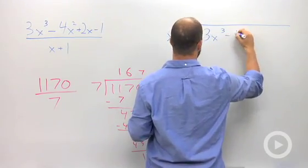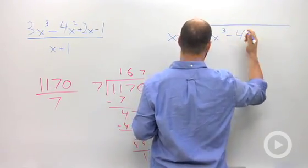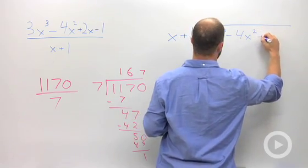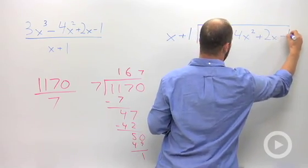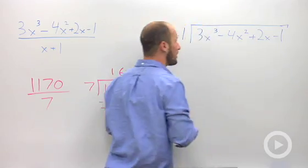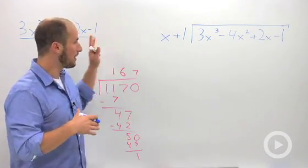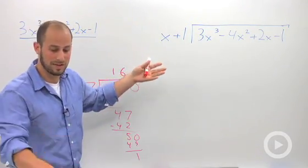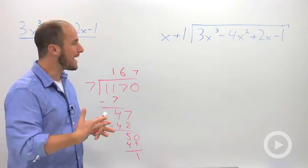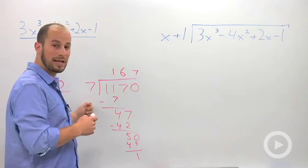3x squared minus—sorry, 3x cubed minus 4x squared plus 2x minus 1. Okay. So we basically are rewriting our problem as a fraction in long division. And the logic is exactly the same as we did right here.